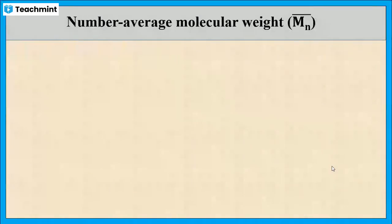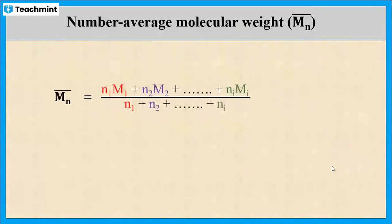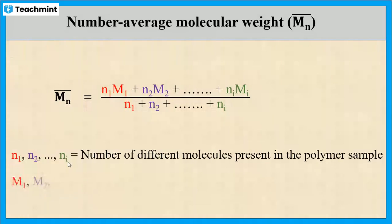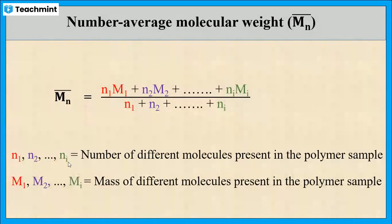First, let us see what is the number average molecular weight, that is Mn bar. It is given by the formula: Mn bar is equal to N1·M1 plus N2·M2 plus so on plus Ni·Mi, whole divided by N1 plus N2 plus so on plus Ni, where N1, N2, N3 up to Ni are the number of molecules with each molecular weight.